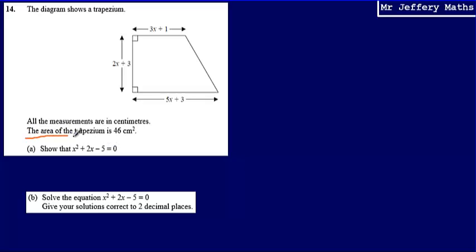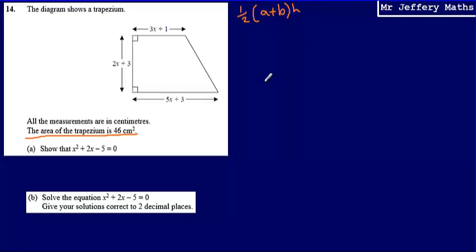The key here is spotting that the area of the trapezium is 46 centimetres squared, so we can set up an equation. This is what the question is inviting us to do when it asks us to show that x squared plus 2x minus 5 equals 0. The equation we set up uses the area of a trapezium formula: area equals half of (a plus b) multiplied by the height, where a and b are the parallel lengths — in this case 3x plus 1 and 5x plus 3.